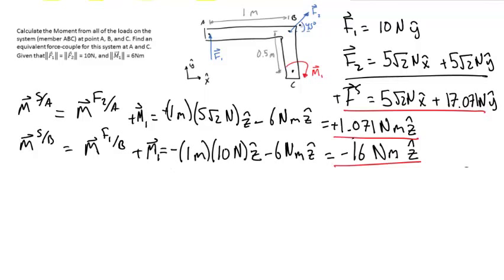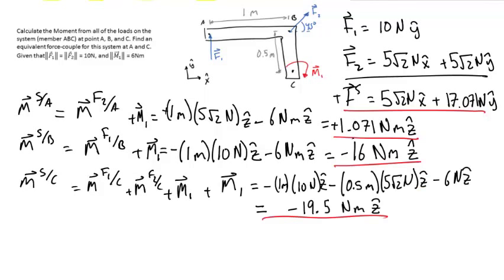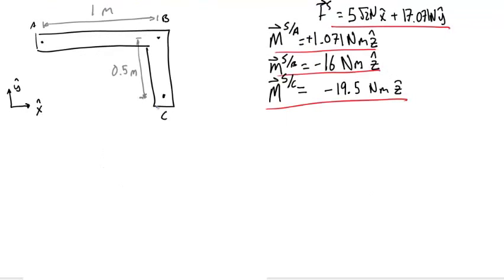The moment from force F1 at A about B, plus M1, gives us the moment from the loads on the system at point B as negative 16 newton meters in the Z-hat direction. The moment from the loads about point C equals the moment from F1 about C, plus the moment from F2, plus the moment from M, which equals negative 19.5 newton meters in the Z-hat direction.